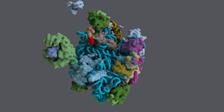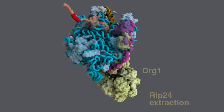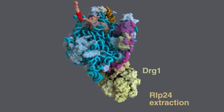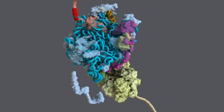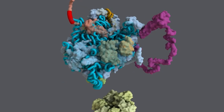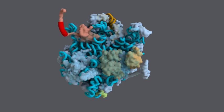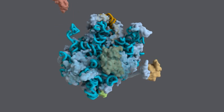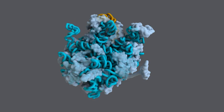In the cytoplasm, 60S biogenesis is completed through a few last maturation steps, including the extraction of various factors, including RLP-24, ARX-1, NMD-3, and TIFF-6. Ribosomal UL-16 is incorporated at this stage, which completes the construction of the peptidyl transferase center. Finally, the mature 60S subunit is ready to join with a 40S subunit during translation.